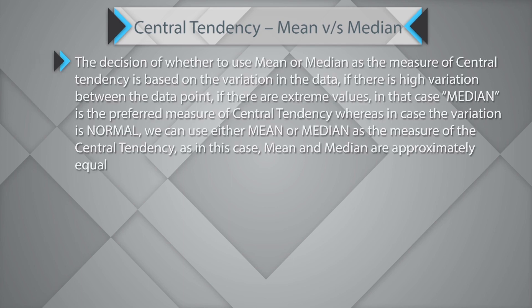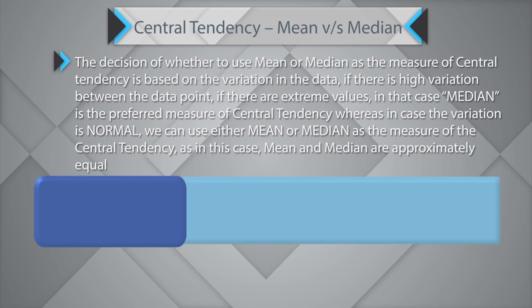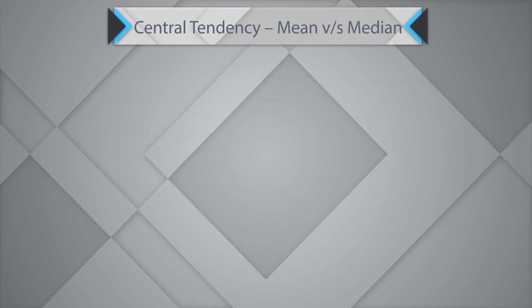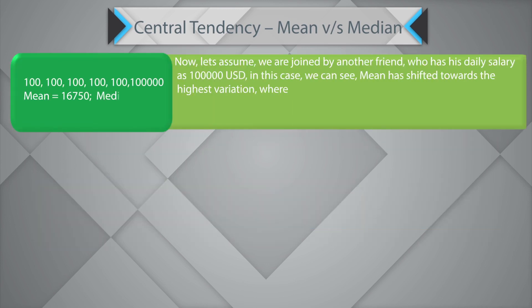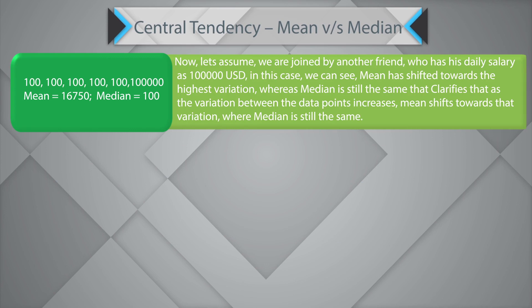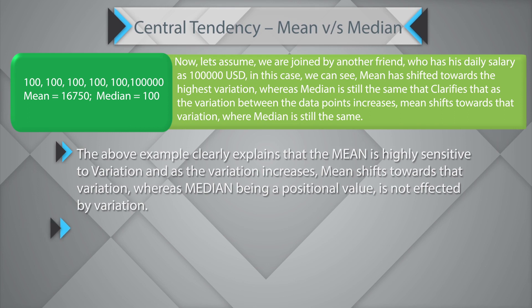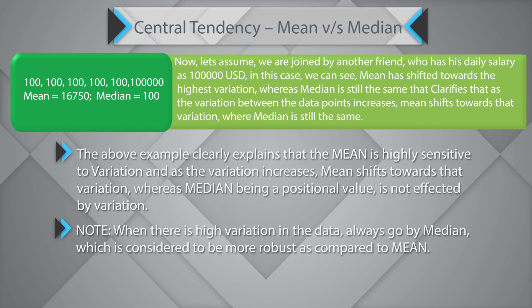The decision on whether to use mean or median as the measure of central tendency is based on variation in the data. If there is high variation or extreme values, median is the preferred measure of central tendency. In cases where data is normal or variation is normal, we can use either mean or median, as in this case mean and median shall be approximately equal.